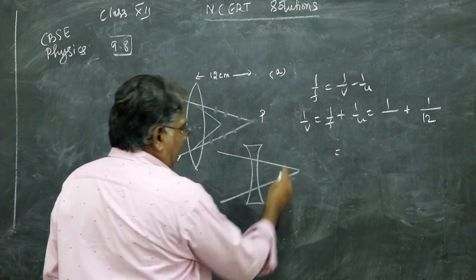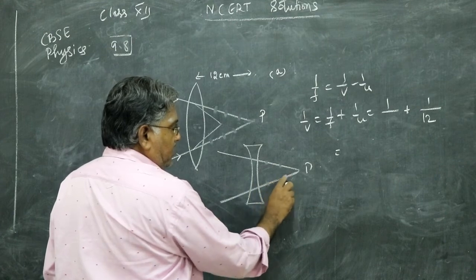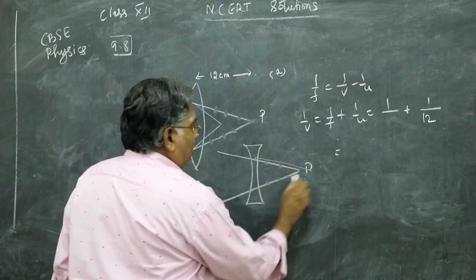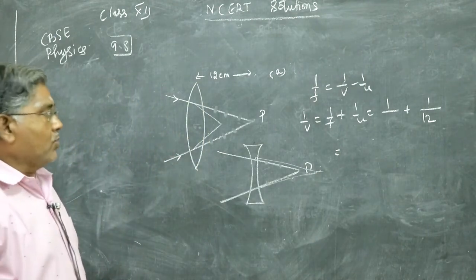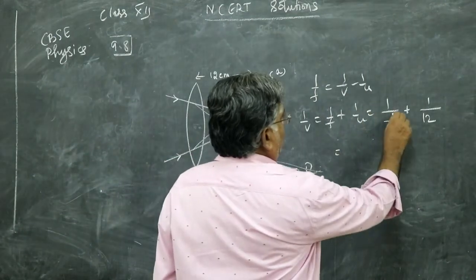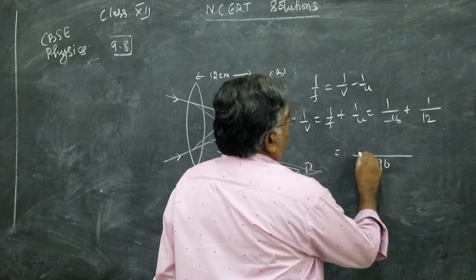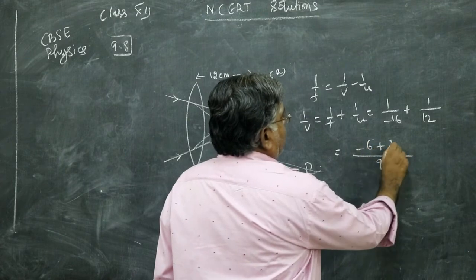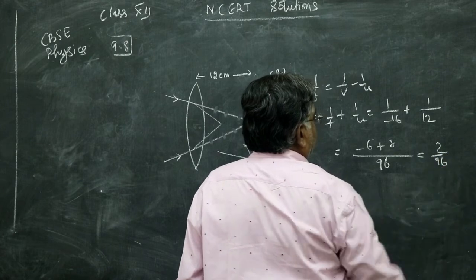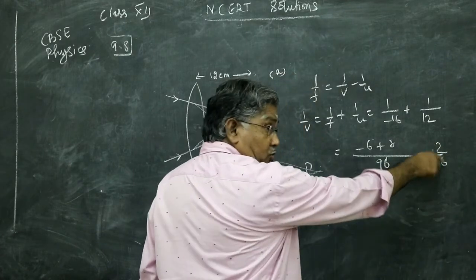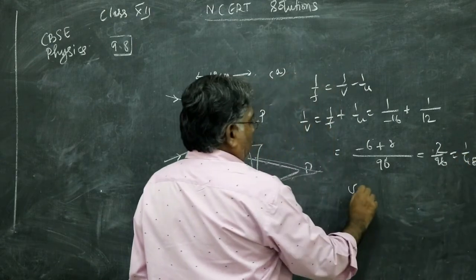If you put that, this P is now acting as a virtual object. The ray will go little further and get converged. We will see what happens: focal length 16 but that is concave, so minus 16. 96 LCM, minus 6 plus 8, 2 by 96. That is 1 by 48, so V is equal to plus 48 centimeter.